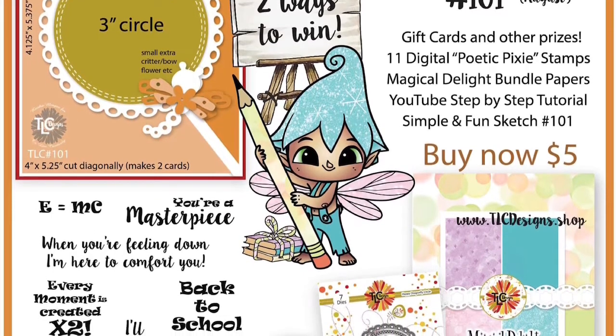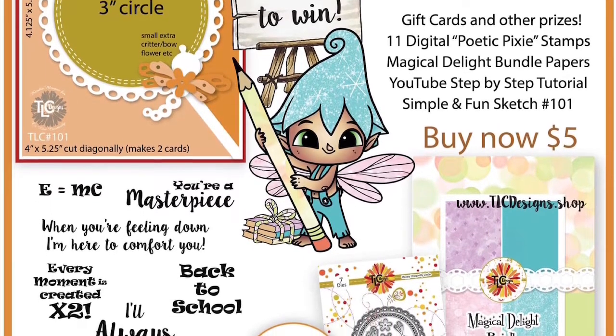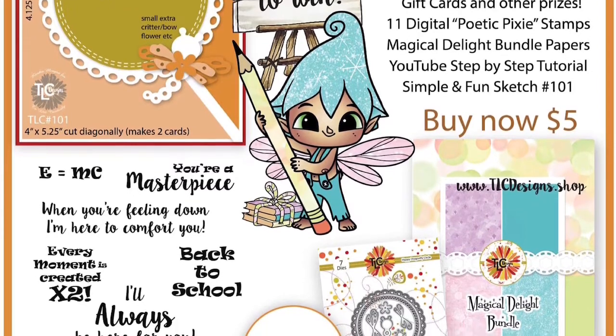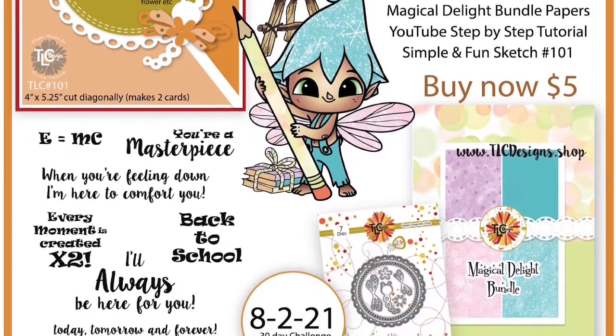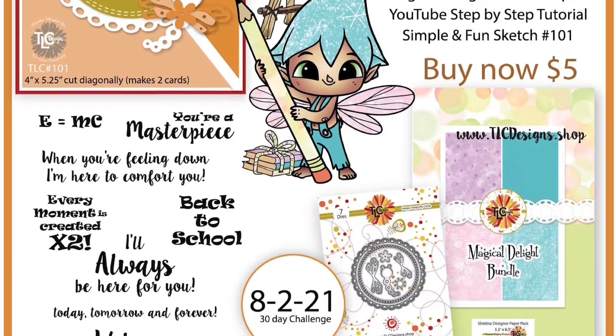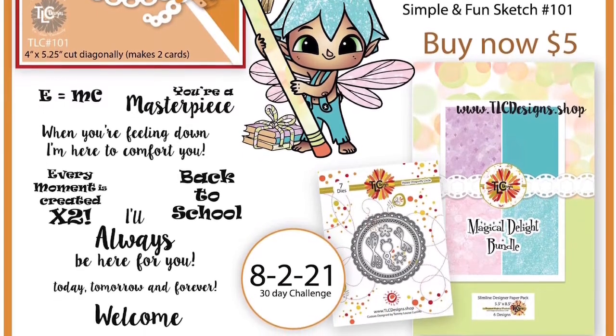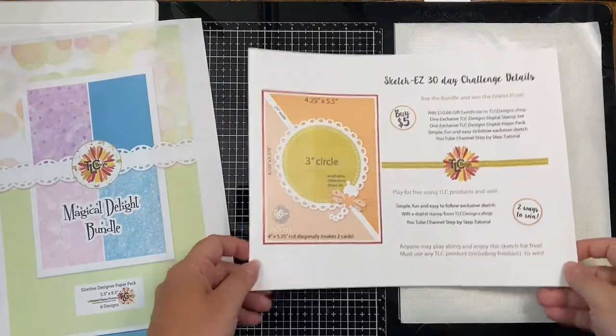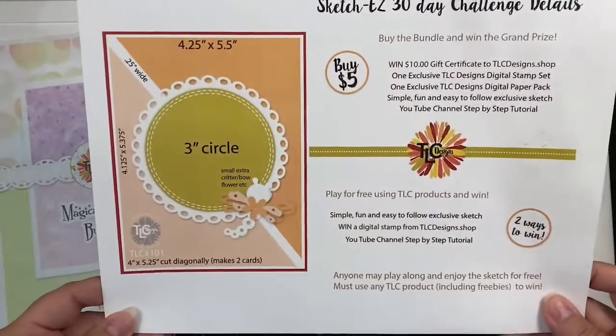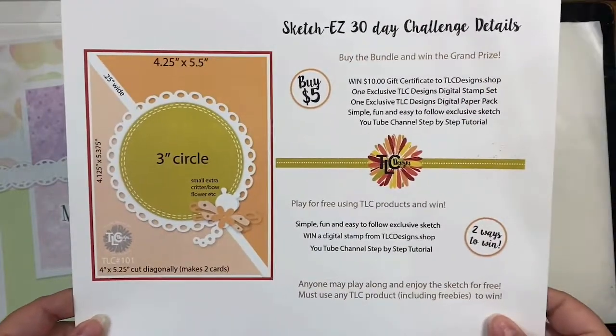For the first 30-day challenge beginning on August 2nd of 2021, the bundle includes the Poetic Pixie digital stamp set which has this cute little fairy holding a pencil plus a wooden sign on an easel, a stack of books and quite a few sentiments. It also includes the Magical Delight bundle paper pack which has six different designs.